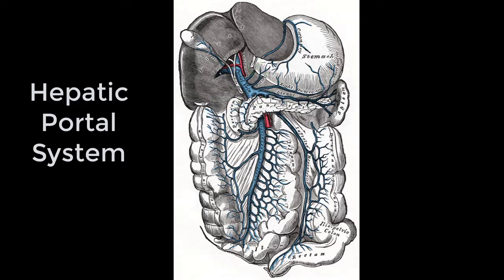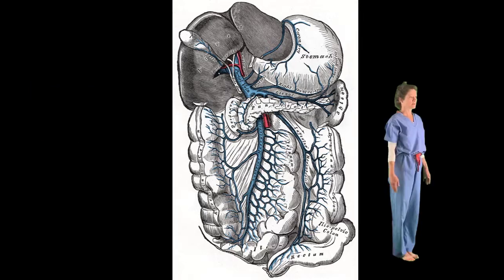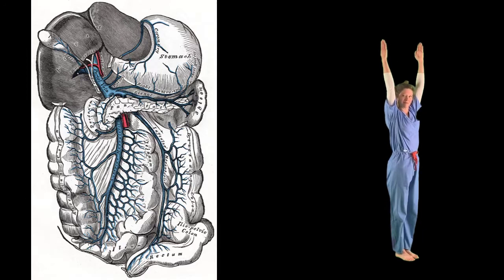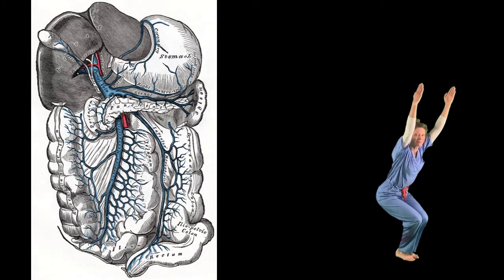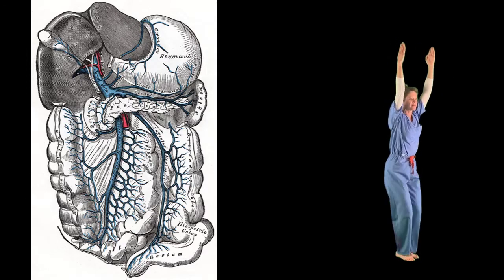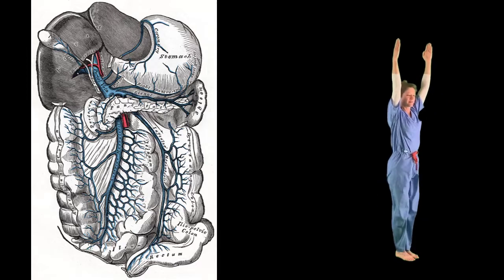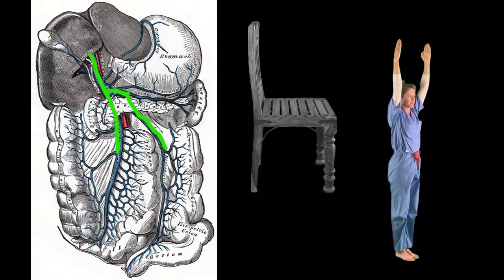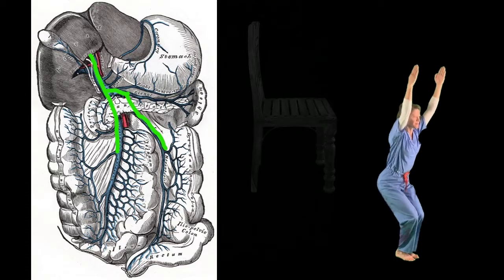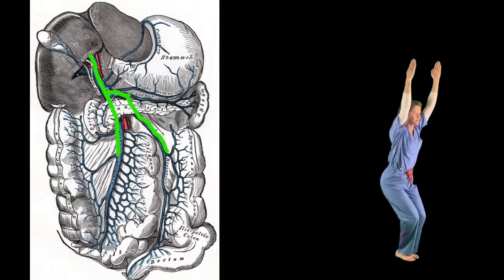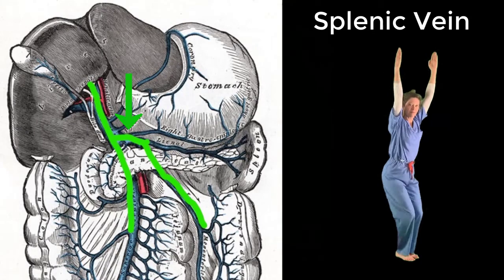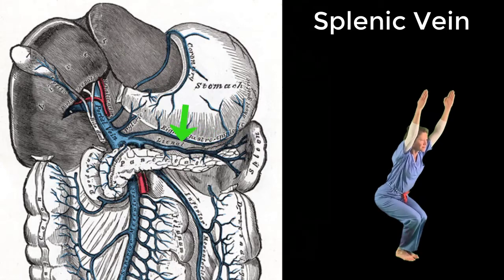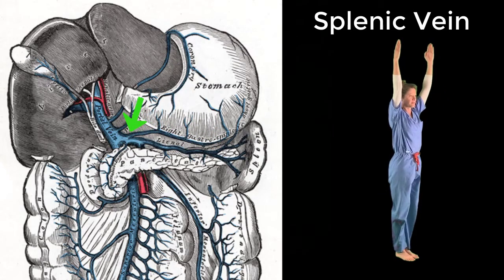The exercise to represent the hepatic portal system is to sink down into a chair position and raise up again, because the main players that comprise the hepatic portal system actually resemble a chair. We'll look at the splenic vein first. The splenic vein forms the seat of the chair as it travels horizontally along the superior border of the pancreas.